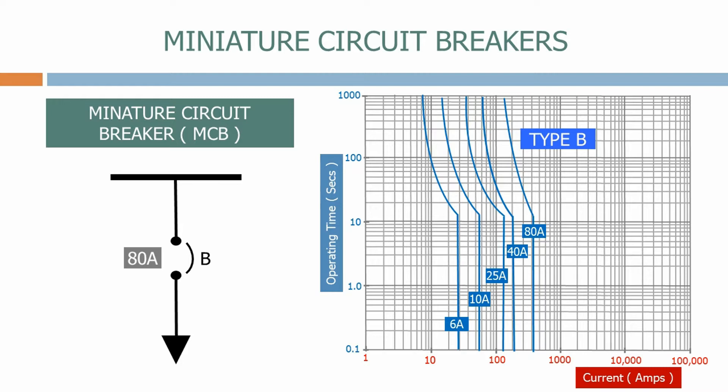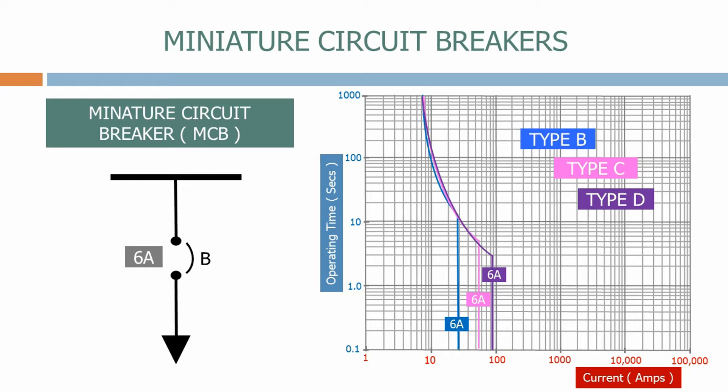Let's now look at a 6 amp rated type B MCB. If we compare it to a 6 amp rated MCB from the type C and type D family you can see the difference between the characteristics. As we can see the slope of the curve is similar to all three families but the type D MCB will trip instantaneously at a higher current level.